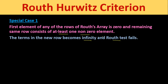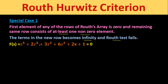To understand this type of case, let us take one example. The characteristic equation given is f(s) = s⁵ + 2s⁴ + 3s³ + 6s² + 2s + 1 = 0. The coefficients are a₀, a₁, a₂, a₃, a₄, and a₅.